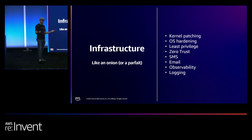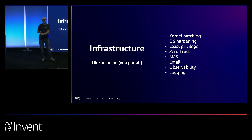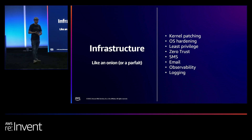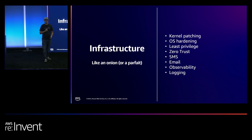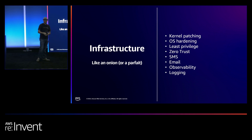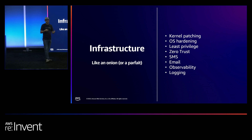Now down one layer to infrastructure. Kernel patching — kernels have vulnerabilities and we're constantly patching them, multiple times per month. You have to harden your OS — run as little as humanly possible. If you're in Docker you have some benefit but you still have the host machine to harden. You have to do least privilege — every service on that machine should not be running as root. It should run as the least privileged user it needs. Zero trust — trust nobody coming to your server. The list goes on and it just gets more and more complicated.